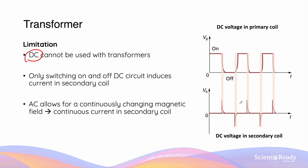By looking at the two graphs, you can see that using a DC voltage power supply is not a feasible way of inducing EMF or voltage in the secondary coil of a transformer. We need to use alternating current — AC — as this allows for continuously changing magnetic flux produced by the current in the primary coil, which by Faraday's law induces EMF and a continuous current in the secondary coil. It is very important to remember that transformers do not work with DC supply. We must always use AC, as this allows for changing flux and continuous induced EMF and current in the secondary coil.